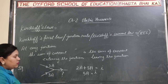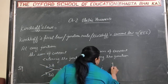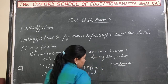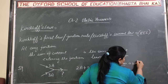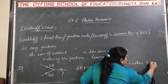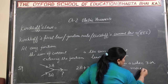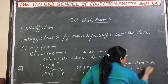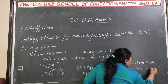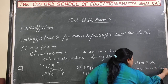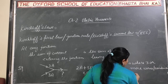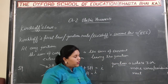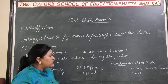Now, what is a junction? This is very, very important. A junction is a point where 3 or more wires, or conductors, are connected together. That point is known as a junction. If there are only 2 wires connected, then it is not known as a junction.